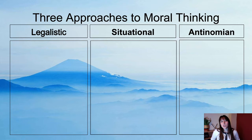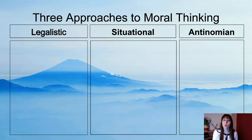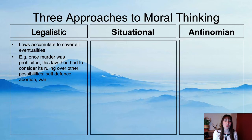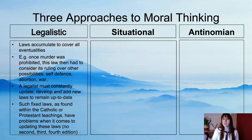The first thing you need to know about is the three different approaches to moral thinking. You won't get a question on this, but it's important to realise where situation ethics falls. First, you have legalistic — exactly as it sounds. Legalistic laws accumulate to cover all eventualities; for example, once murder was prohibited, this law then had to be considered in its ruling over other possibilities: self-defence, abortion, war. A legalist must constantly update and add new laws to remain up to date.